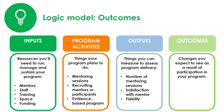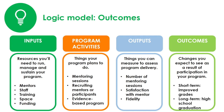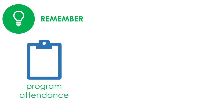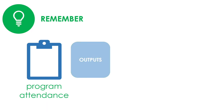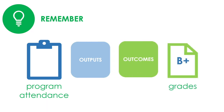Finally, we come to outcomes. Outcomes are the changes you expect to see in the youth as a result of their participation in your program. People often break this down to short-term and long-term outcomes. For our mentoring program, the short-term change in youth would be improved grades, and the long-term change would be high school graduation. Remember, things like program attendance are not outcomes because they aren't changes in youth — program attendance would be an output because it is a measure of program delivery. An outcome would be something like improved grades because that's a change you hope to see in youth. Check out the resource links on the webpage for guidance on developing your own theory of change and logic model.